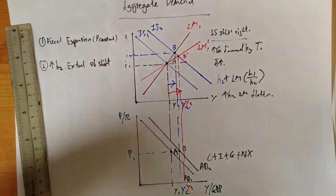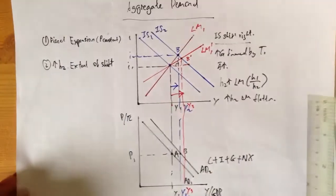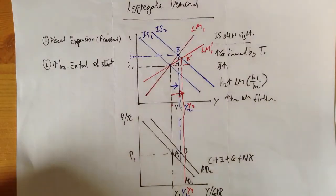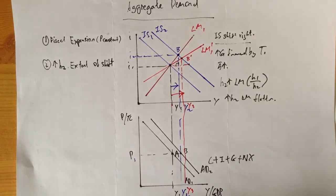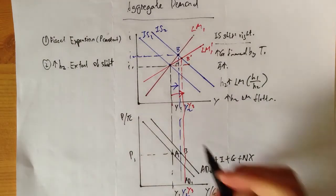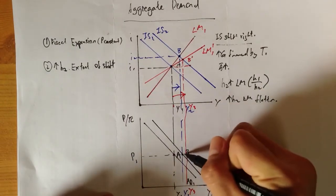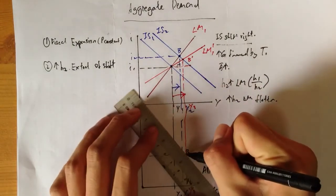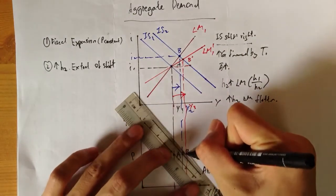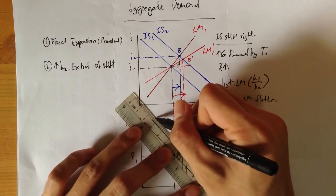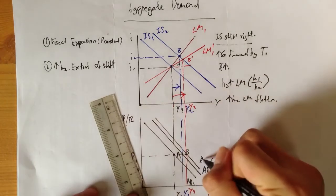From here, we know that at the same price level, we're going to have an even larger shift of AD. At the same price level, we're going to have an even more outward shift for AD all the way here to AD3.